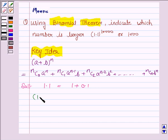Now 1.1 can be written as 1 plus 0.1. So 1.1 to the power 10,000 can be written as (1 + 0.1) to the power 10,000. Now this is in the form (a + b) to the power n where n is 10,000, a is 1 and b is 0.1.